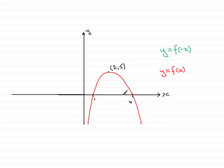So what is that going to mean? Well, the point (1, 0) is going to be mirrored over to negative 1, 0. The point (4, 0) is going to be mirrored over to negative 4, 0. And the maximum point is going to be reflected over to minus 2, 5.